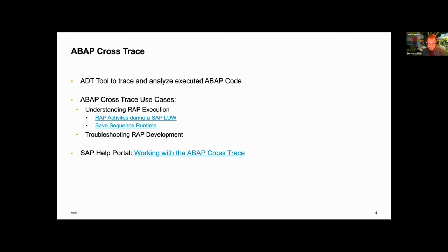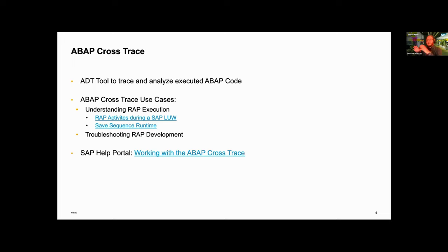Why ABAP Cross Trace? Formerly, all the different ABAP framework teams had their own troubleshooting tools, their own support tools. They were various — some were really extensive, some weren't — and they were very isolated, not well integrated, with a lot of borders. With RAP and all the teams coming together, the idea and vision behind this tool is to get a unified and holistic tool where you can track down issues.